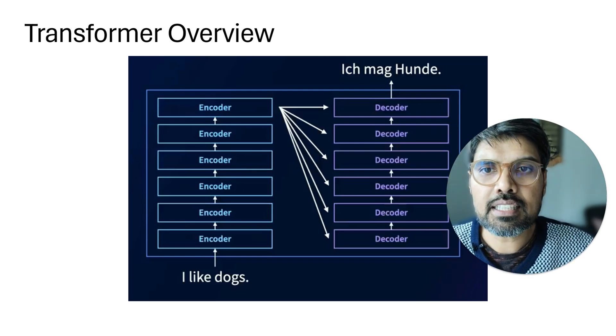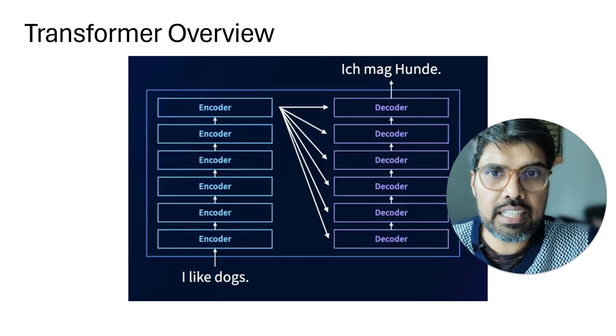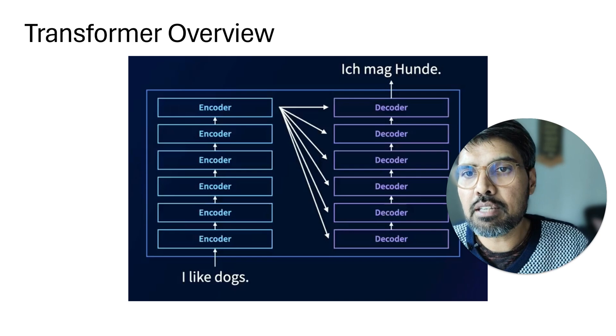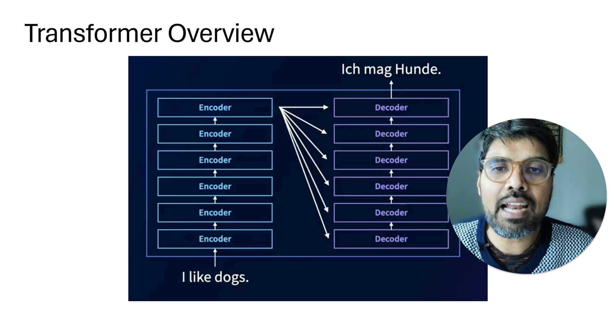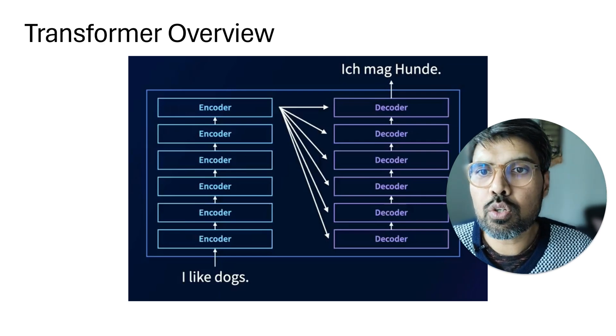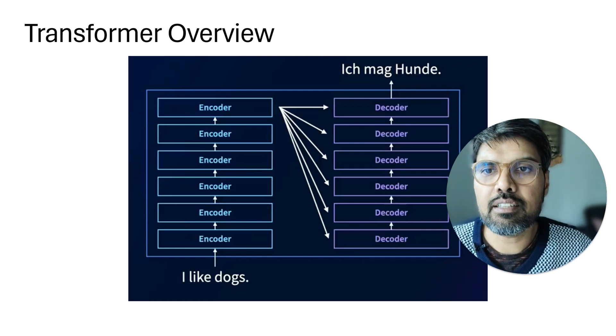By passing data through these successive encoder layers, the model captures deeper and more complex understanding of language semantics. This is then fed to the decoder layers on the right side of the diagram.